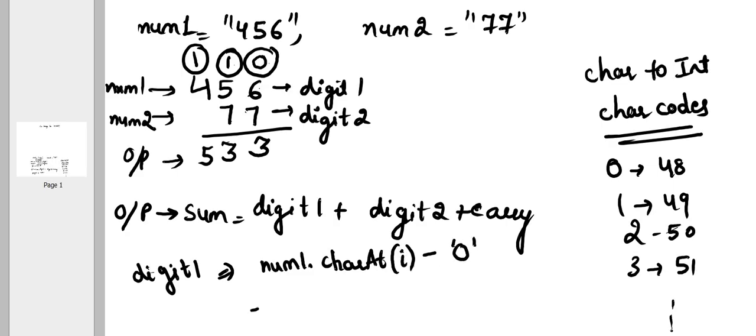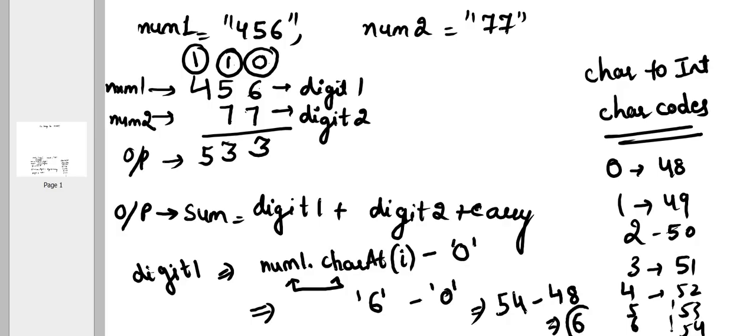This is how we convert our character to integer. So basically what is this character? This character is let's say 6, 6 minus 0. So what would be the character code of 6? 4, 5, 6. It would be 52, 53 and 54. So 54 minus character code of 0 which is 48 which will give you the number 6.